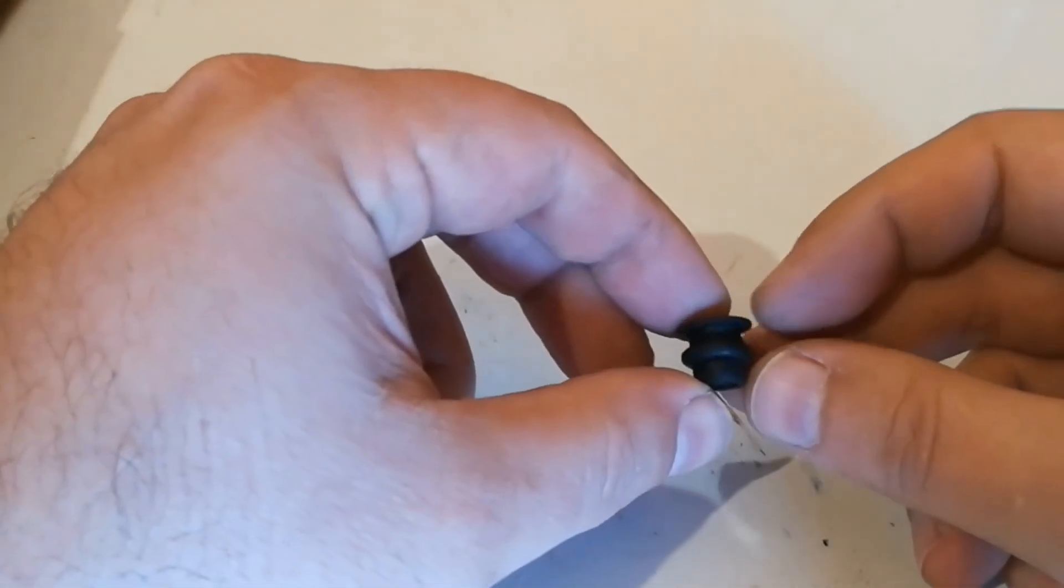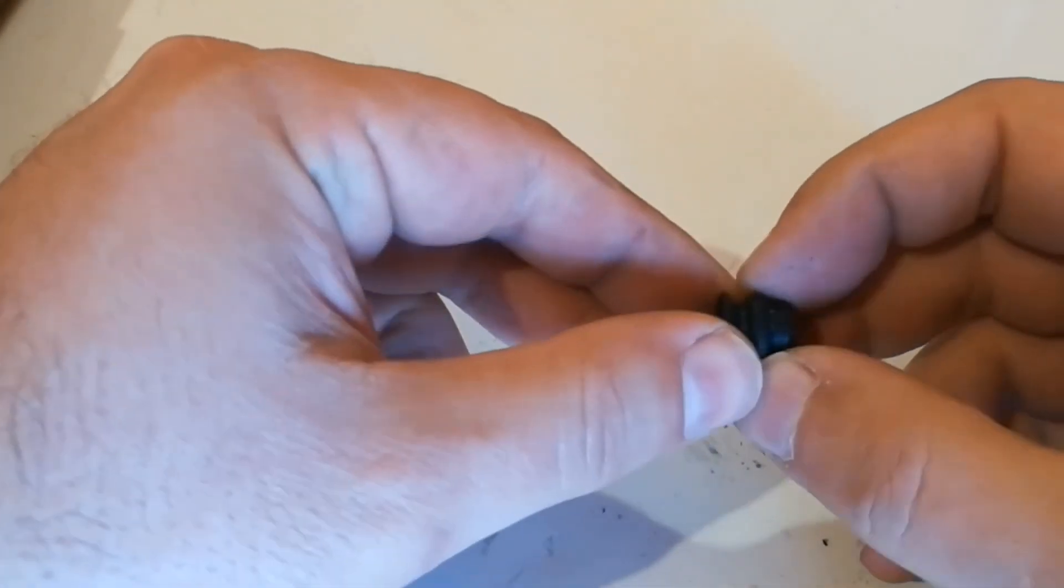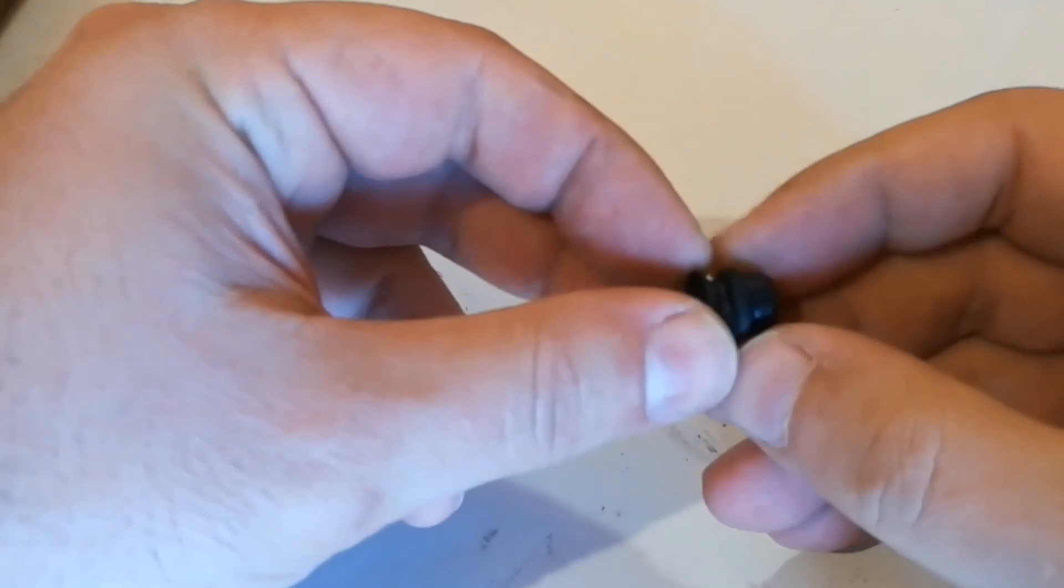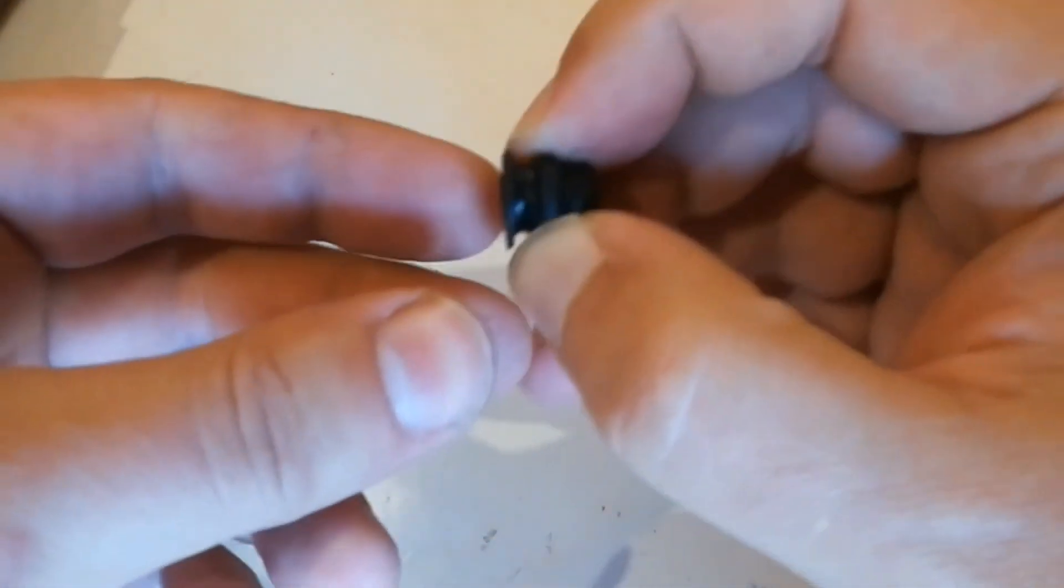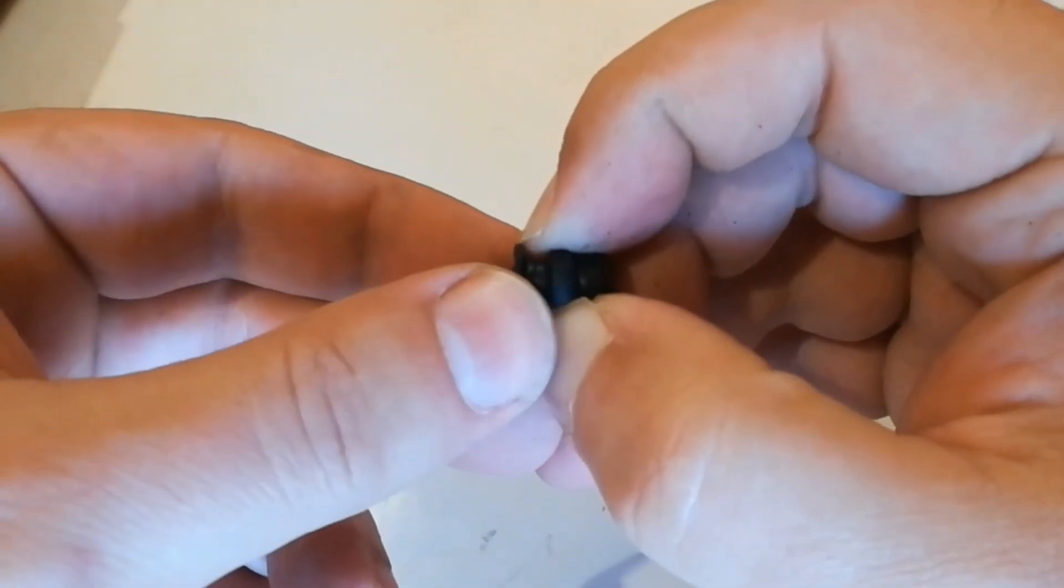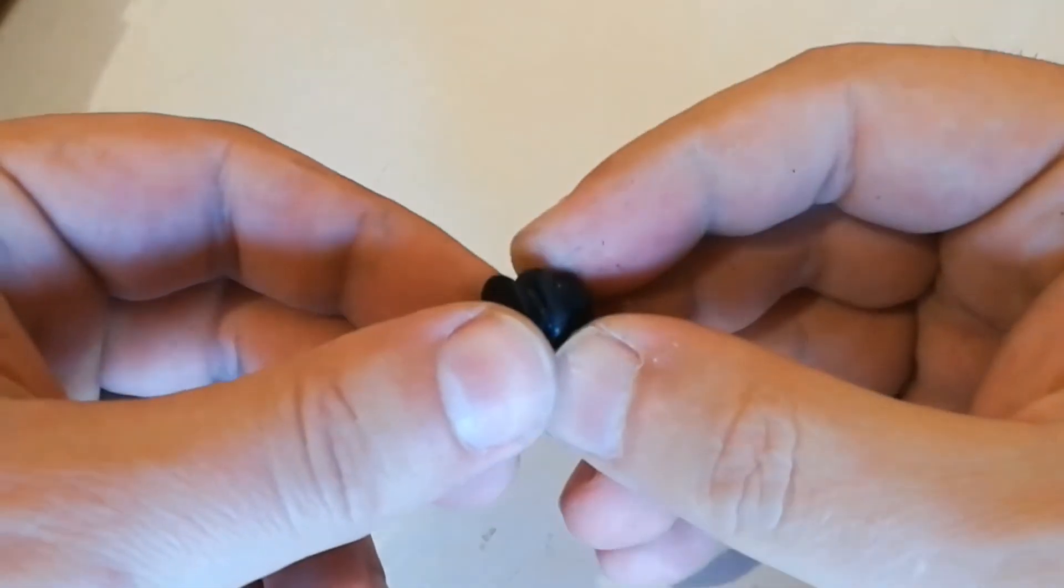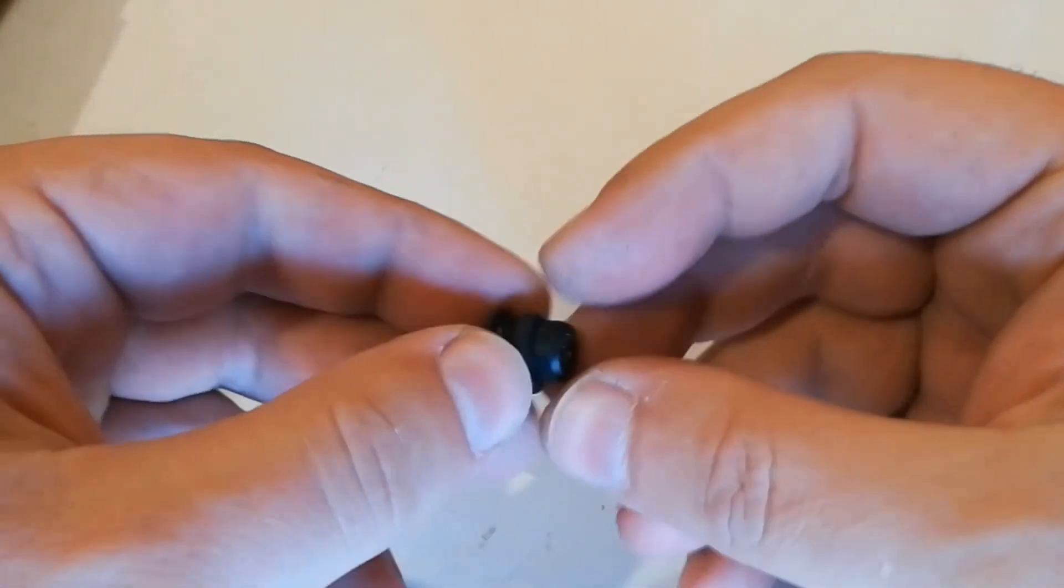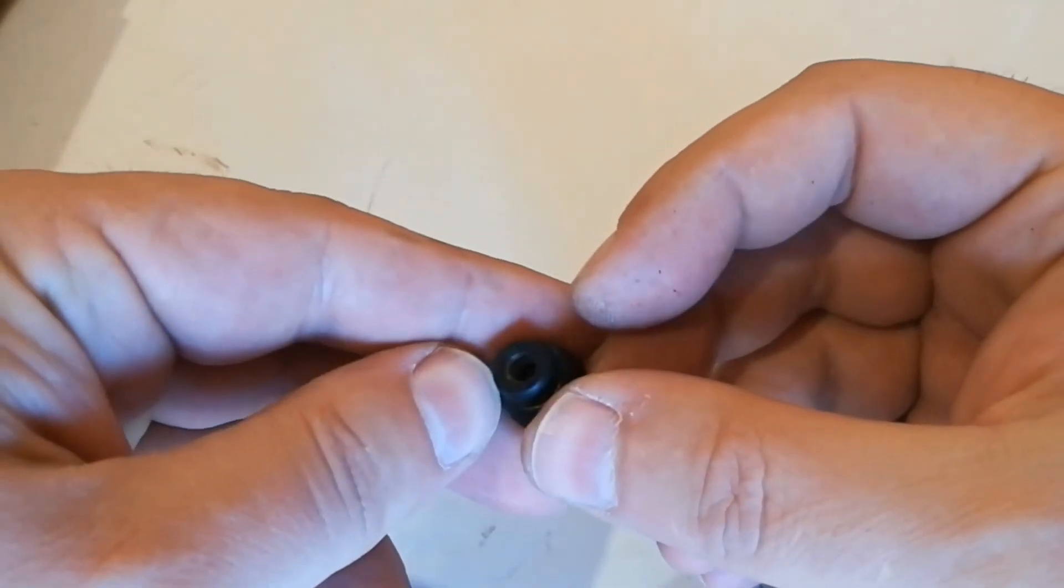This is how an old well nut looks like. It's permanently changed its form. And when you press it, it's going to somehow go to the original form but not for a long time.